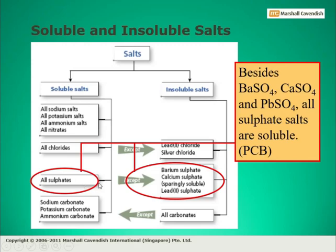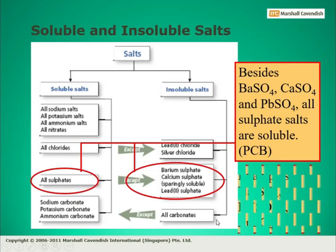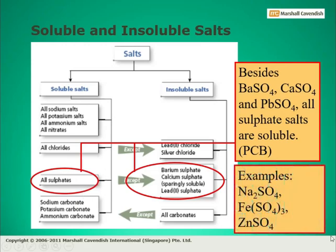The soluble sulfates include sodium sulfate, iron sulfate — this is ferric sulfate, although ferrous sulfate is also soluble — zinc sulfate, potassium sulfate, and ammonium sulfate. All these sulfates are soluble.